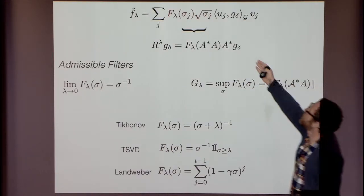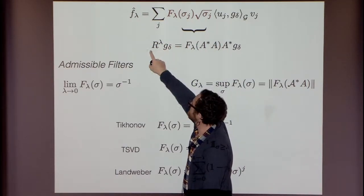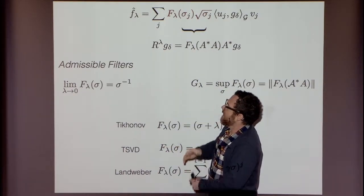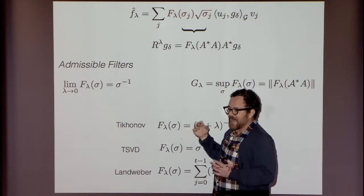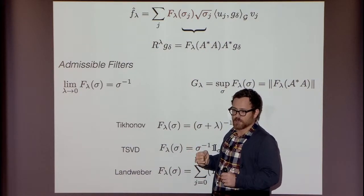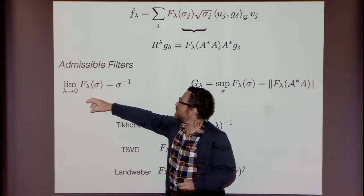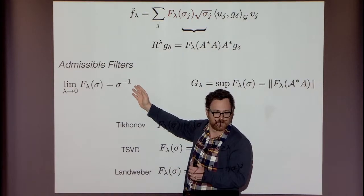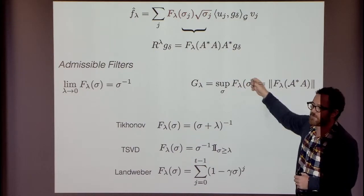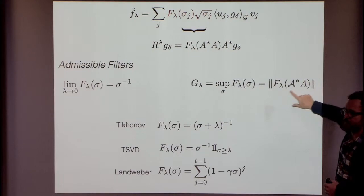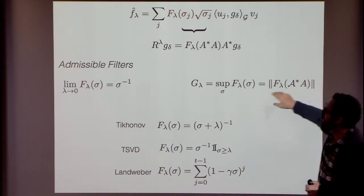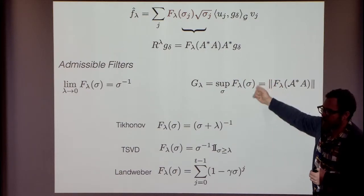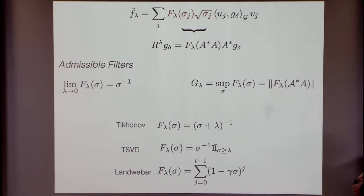What's a good filter function? These are linear methods that act linearly on G-delta. You can formalize the axioms that define admissible filters for good linear regularization. When lambda is small, it should return 1/σ. The sup-norm of the filter function, essentially the operator norm, should be controlled by lambda — exactly what happens in Tikhonov. If lambda is small or large, this controls the condition number.